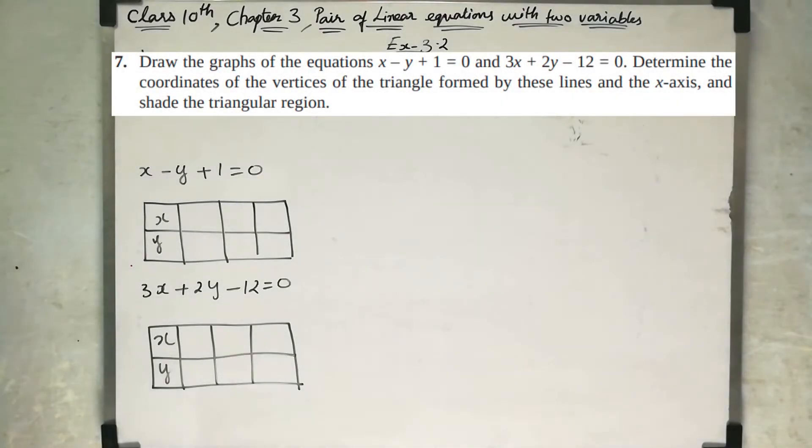Hi students, now for the standard CBSE NCERT syllabus Class 10, Chapter 3, Pair of Linear Equations with Two Variables, Exercise 3.2. Draw the graph of the equations x minus y plus 1 equal to 0, first equation, and 3x plus 2y minus 12 equal to 0. Determine coordinates of the vertices of the triangle formed by these lines and the x-axis and shade the triangular region.